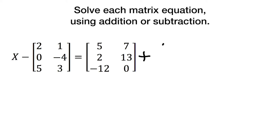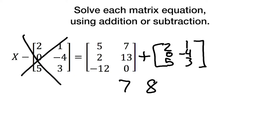Meaning plus 2, 0, 5, 1, negative 4, 3, which we'll cancel this out, meaning 5 plus 2 is 7, 7 plus 1 is 8, 2 plus 0 is 2, 13 minus 4 ends up being 9, negative 12 plus 5 is negative 7, and 0 plus 3 is 3. So that would be our answer.